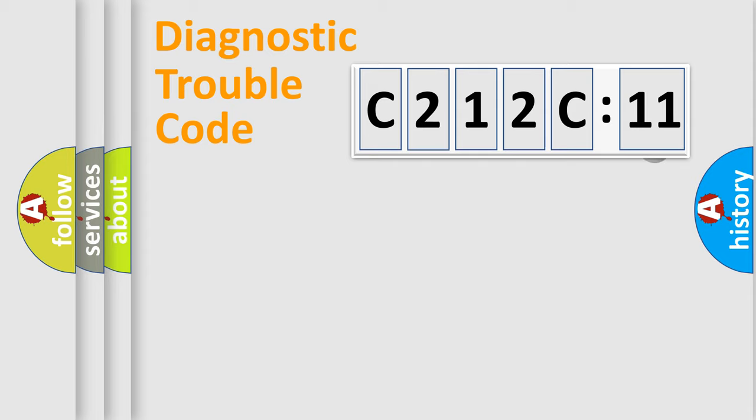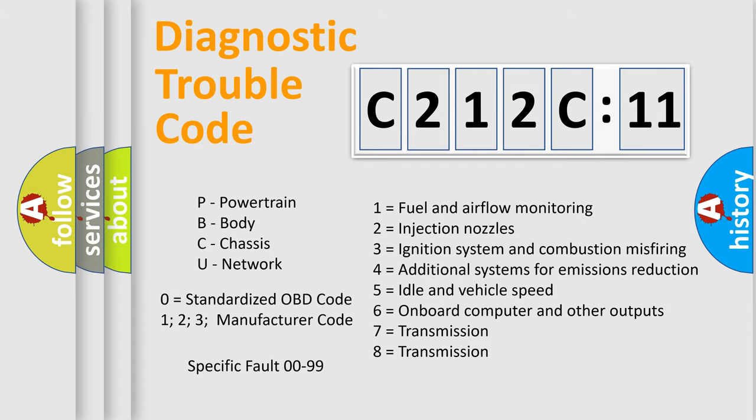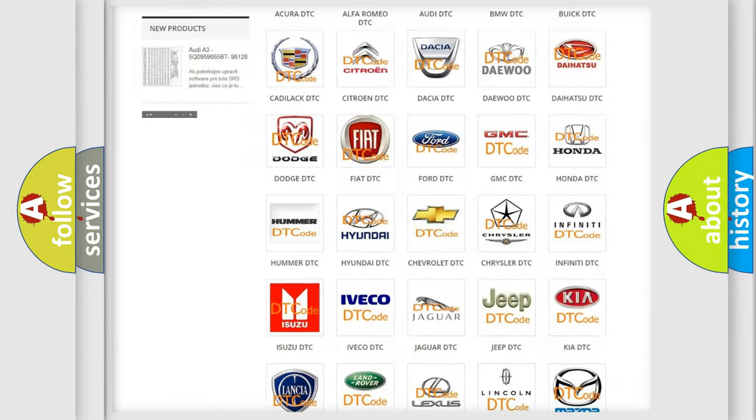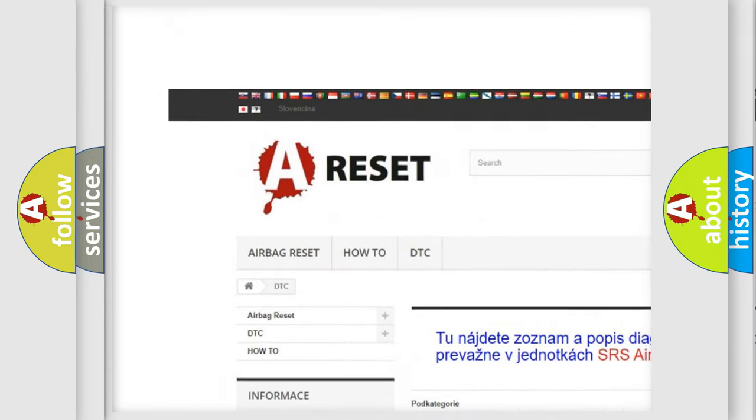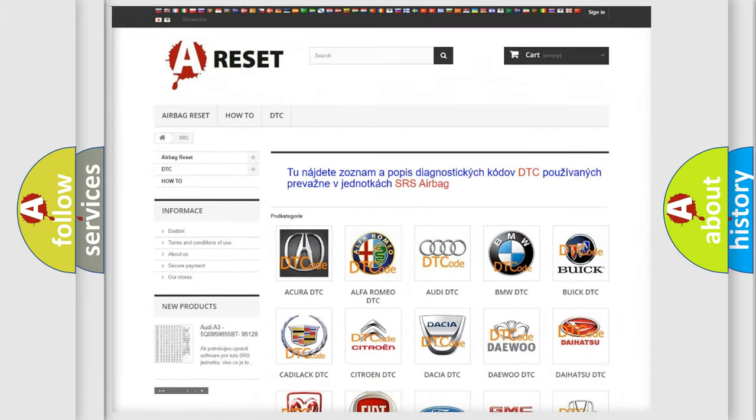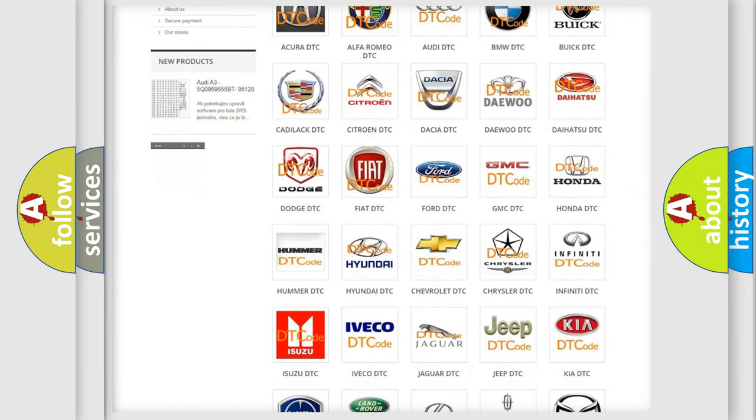Our website airbagreset.sk produces useful videos for you. You do not have to go through the OBD2 protocol anymore to know how to troubleshoot any car breakdown. You will find all the diagnostic codes that can be diagnosed in Chrysler vehicles. Also many other useful things. The following demonstration will help you look into the world of software for car control units.